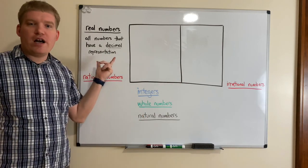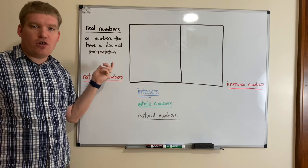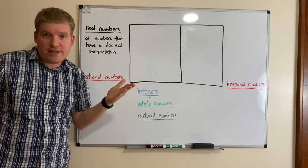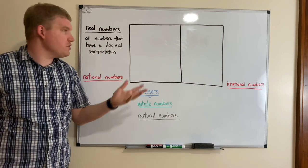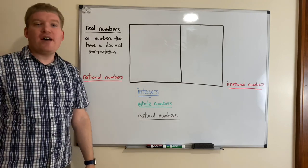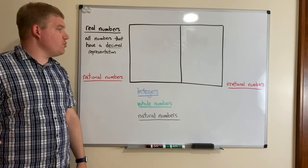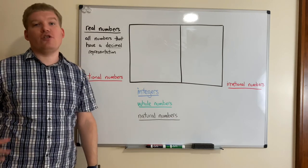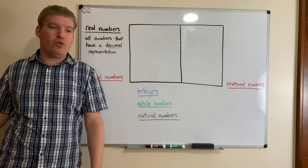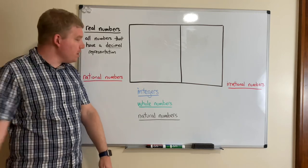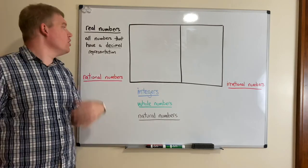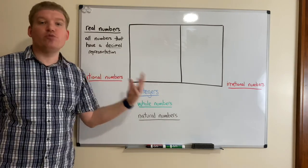So 1, 2, 3, 4, 5 — obviously they're all real numbers. They have decimal representations: 1.0, 2.0, etc. But things like 3/7, which is a weird decimal that repeats forever, is a real number. Pi — 3.14159 — doesn't repeat but continues forever, and is still a real number. It is something that exists.